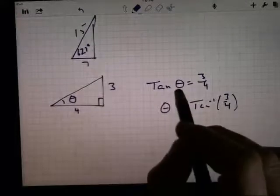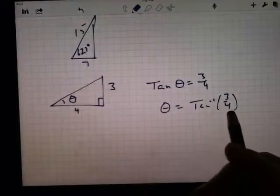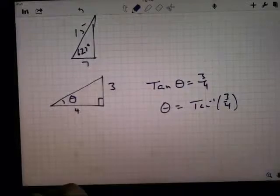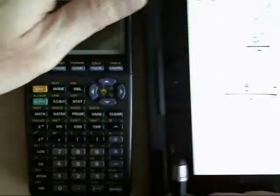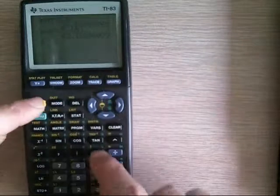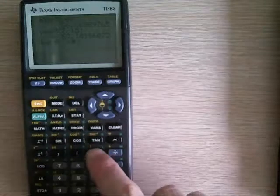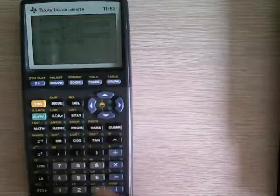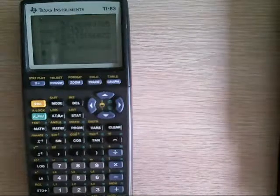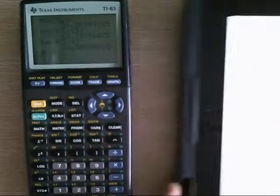The trig function takes the angle in, gives you the ratio of sides out. The inverse trig function takes the ratio of sides in, and the angle comes out. Typing that into my calculator. I'm going to say second function of tangent is tangent inverse 3 divided by 4, because that's the ratio of sides. And this should be the same answer as the first one. And sure enough, 36.869. So we got the same answer as before.